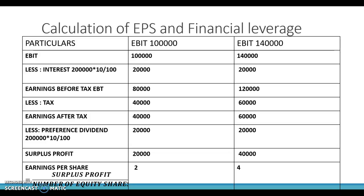When there is a 40% increase in EBIT: original EBIT was Rs.1,00,000, so new EBIT is Rs.1,40,000. Less interest (fixed) Rs.20,000; earnings before tax = Rs.1,20,000. Less tax at 50% = Rs.60,000; earnings after tax = Rs.60,000. Less preference dividend (fixed) Rs.20,000; surplus profit = Rs.40,000. Earnings per share = Rs.40,000 ÷ 10,000 = Rs.4.